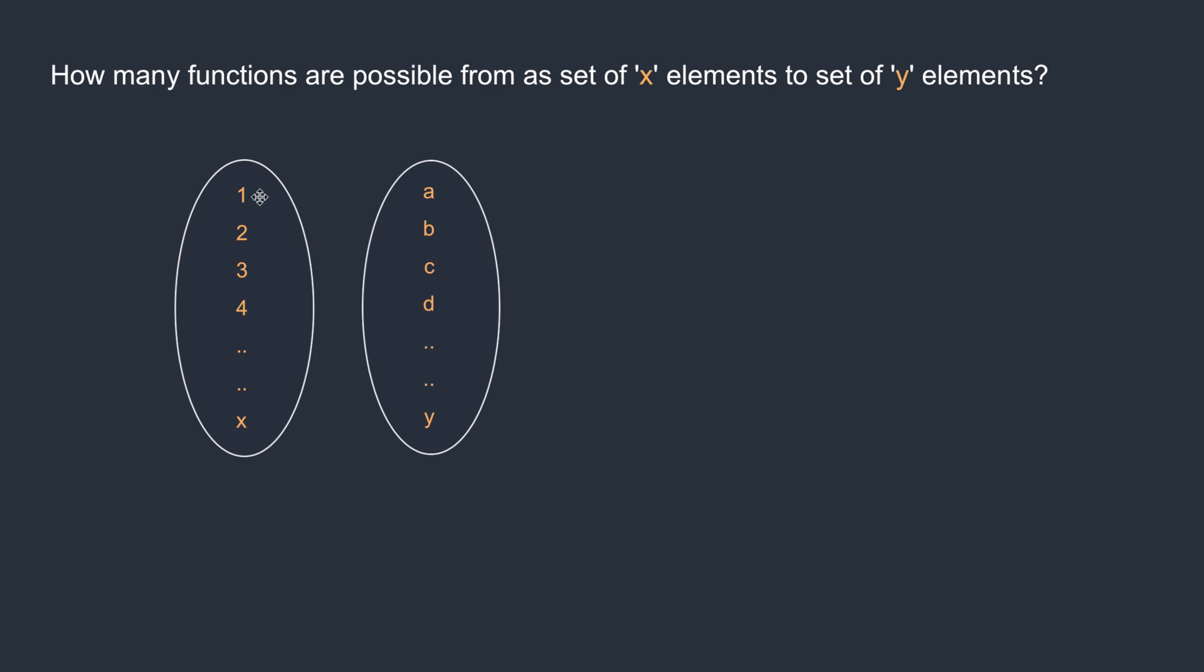One can be mapped with a or b or c or any of the elements. So how many possibilities are there? Here we have y elements. So this particular one can be mapped with any of the y possible cases. How about two? Even two can be mapped with a or b or c, any of the y elements. So this also has y possibilities. Three also has the same. Each and every element has y possibilities. So the number of functions will be, each is an independent event. So y into y into y. How many elements are there in this particular set? We have x elements. So x times, which is nothing but y power x. This is the total number of functions from a set of x elements to y elements.